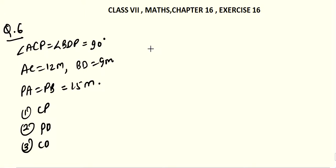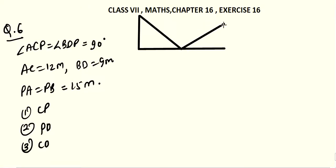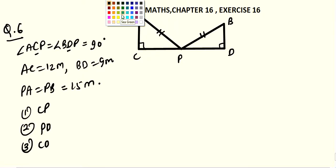Your triangle has vertex A, angle C is 90 degrees because angle ACP is 90. Then this is P. D has 90 degrees because angle BDP is 90. Then this is B. This indicates that AP and BP both are equal. AP equals PB, which is given as PA equals PB. So PA and PB these two lines are equal.